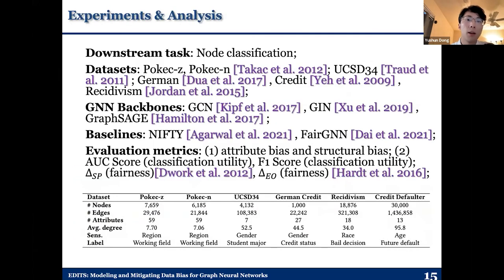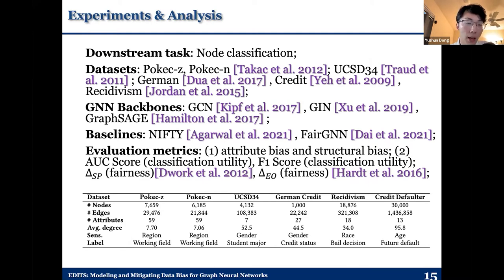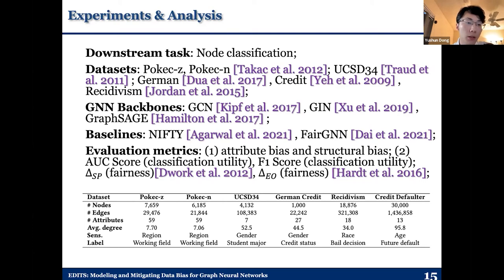Here come our experiments. We perform experiments based on the node classification task, with six different datasets — three are web-based networks and three are real-world networks from other domains. We adopt three different graph network backbones and two state-of-the-art baselines for debiasing graph networks, including NIFTY and FAIR GNN. For evaluation metrics, we adopt our proposed two bias metrics, and also traditional evaluation metrics: AUC score and F1 score for classification utility, and delta statistical parity and delta equal opportunity to evaluate fairness.